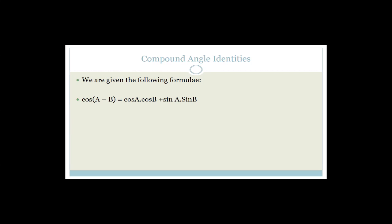There are very few theory parts to maths. In geometry there are theorems, but in trig and paper one, there are very few theory questions. One thing you can learn is to derive these compound angle identities. Ideally it's better to understand how it works than to learn it purely by heart, because it's easy to memorize something and then forget halfway through an exam and have a panic attack.